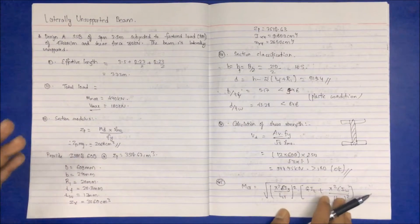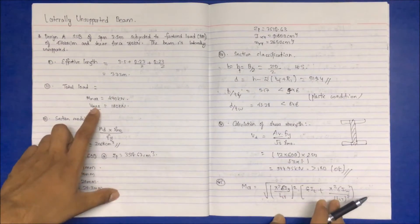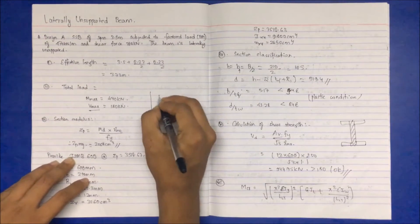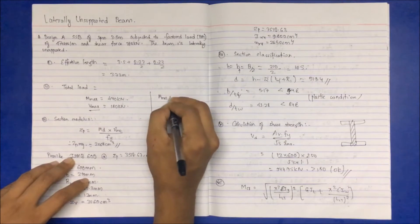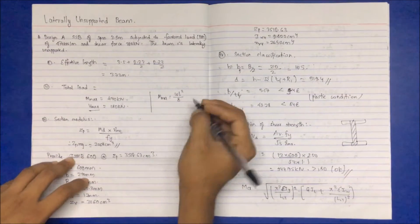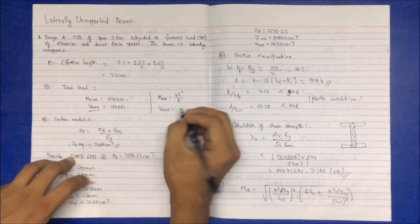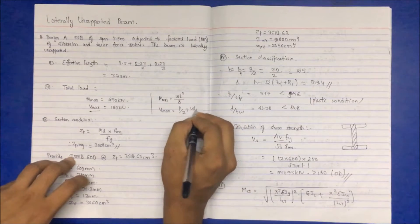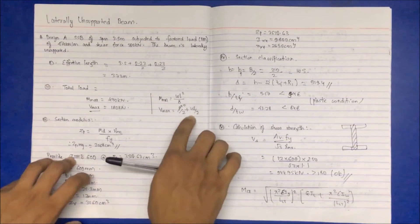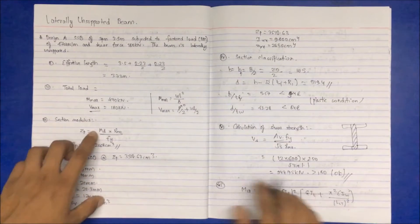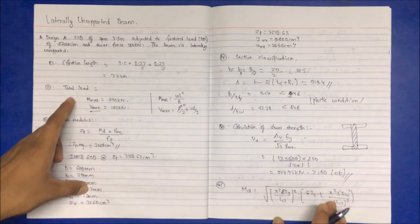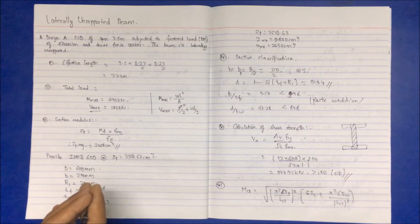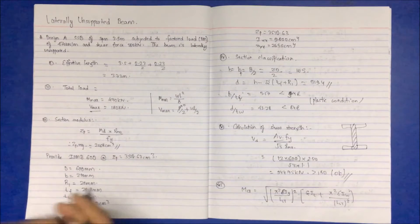In the previous video, the step was to calculate the total load and then use it to find M_max using the formula M_max = WL²/8, and for V_max the formula was P/2 + WL/2. Since the point load is zero, WL/2 was used. But in our case the bending moment maximum and maximum shear force are already given, so we move to the next step.